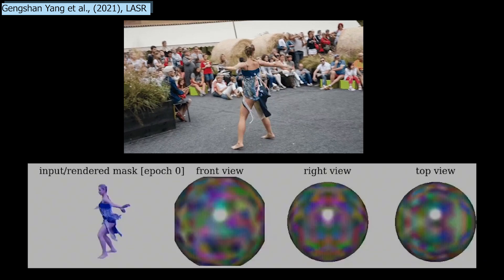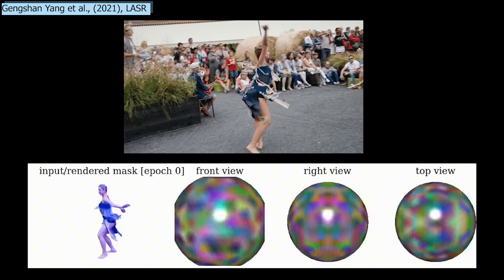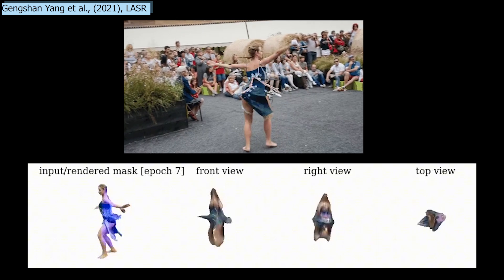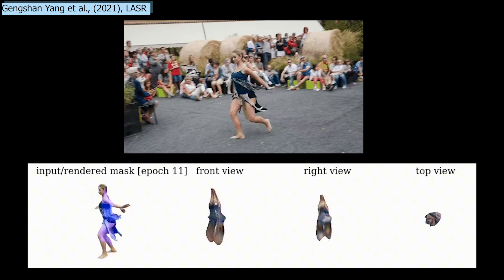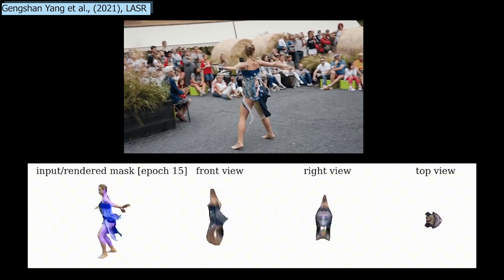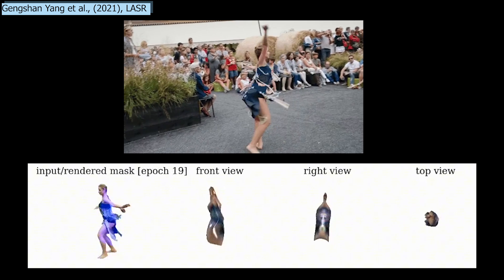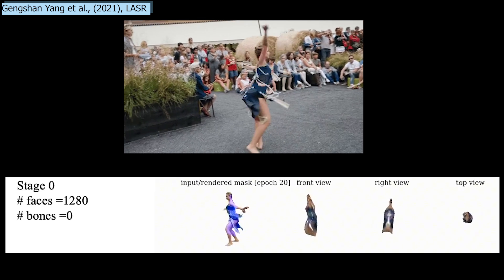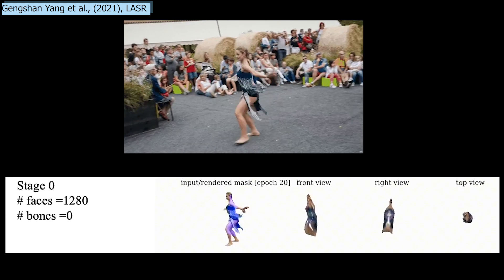They start the rendering process with a sphere, assuming it is a rigid object, so an object that does not have articulations. With this assumption, they optimize the shape and camera viewpoint understanding of their model iteratively for 20 epochs. This rigid assumption is shown here with the number of bones equal to zero, meaning that nothing can move separately.